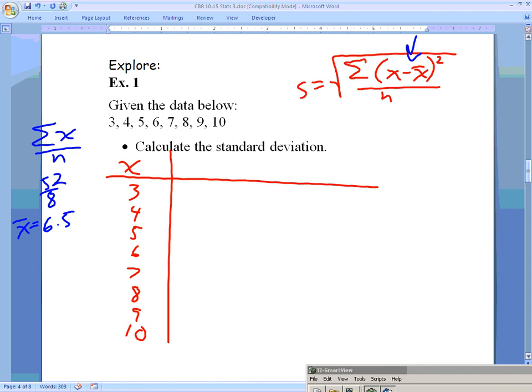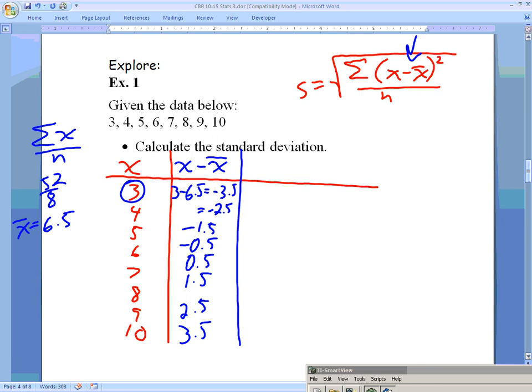For my second column, I'm going to take the data minus the mean. Starting with 3, we take that 3 and subtract our mean of 6.5, and we end up with -3.5. Then I do 4 minus 6.5, which gives me -2.5, then 5 minus the mean, which is -1.5, then 6 which is -0.5, and 7 minus 6.5 which is 0.5, and 1.5, 2.5, and 3.5. You can see there's a symmetric relationship going on here because our numbers are all sequential and nice like that.